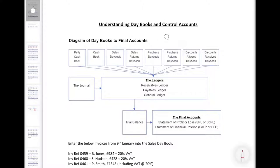We're going to be discussing understanding day books and control accounts. At this point it's important to understand that every transaction within the business must be recorded within the accounts, and to support that we need a business document to evidence all transactions posted in the accounts. For example, when we make a sale our supporting business document is an invoice. For returns we use a credit note, and the same applies with discounts.